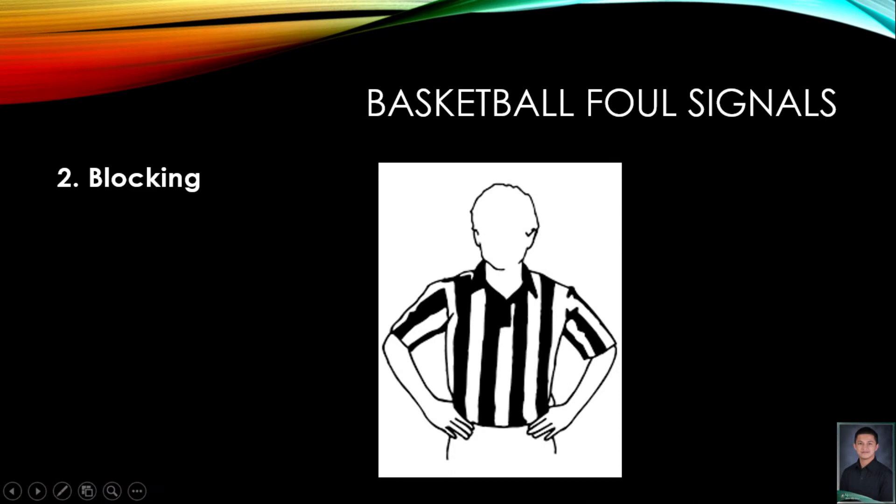Number two is the blocking foul. If a defensive player commits a blocking foul, the official will have both hands in fists touching his hips and his elbows in tight against his body.